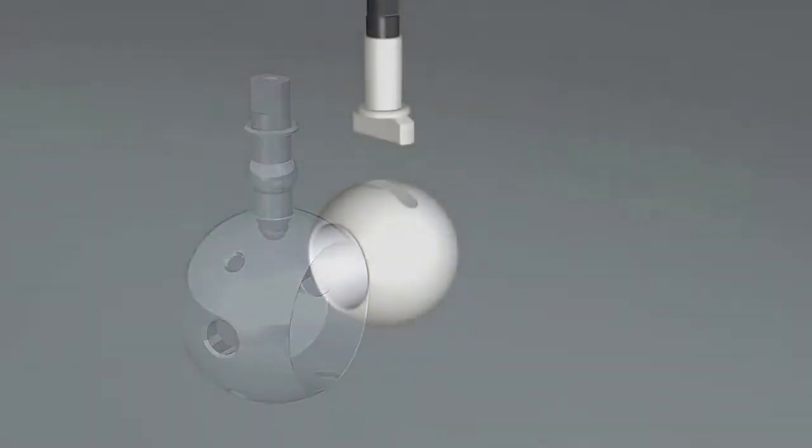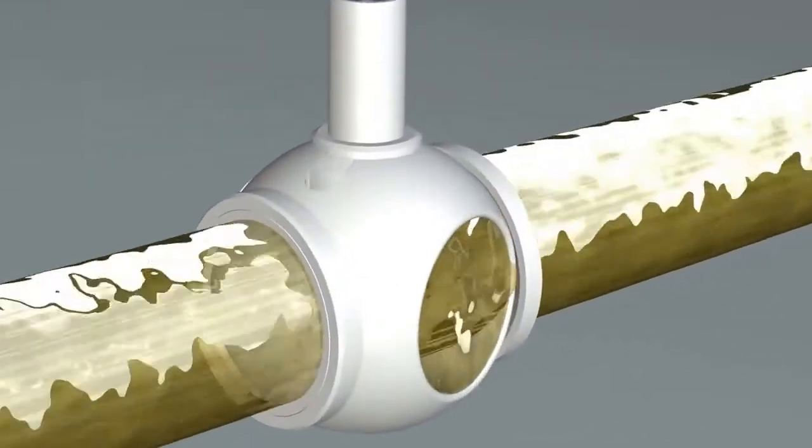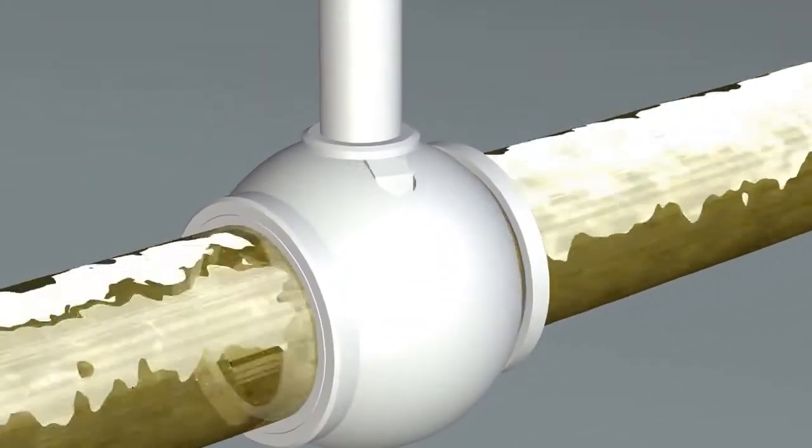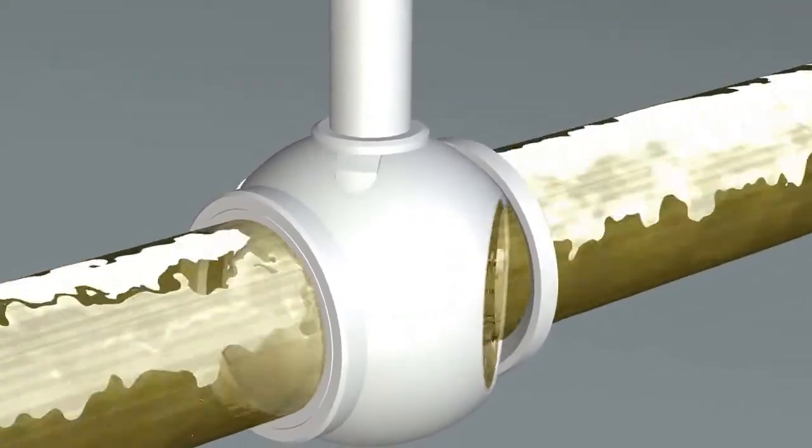In traditional designs, the ball and stem are two separate line components which act together when the valve is operated. The two-piece ball and stem design is proven over many years and continues to work successfully in the majority of applications.